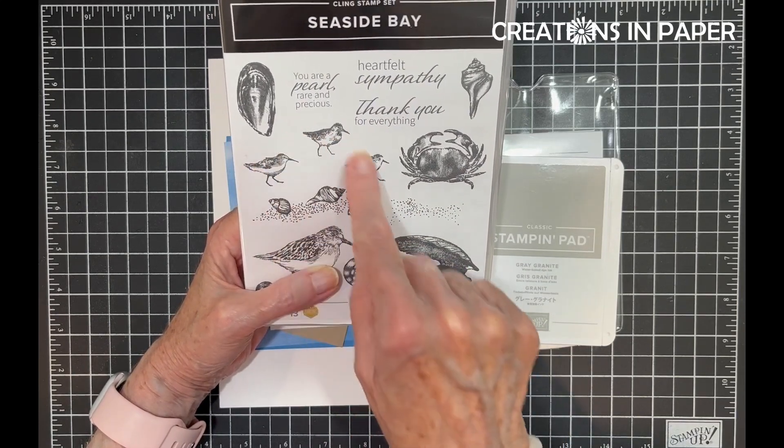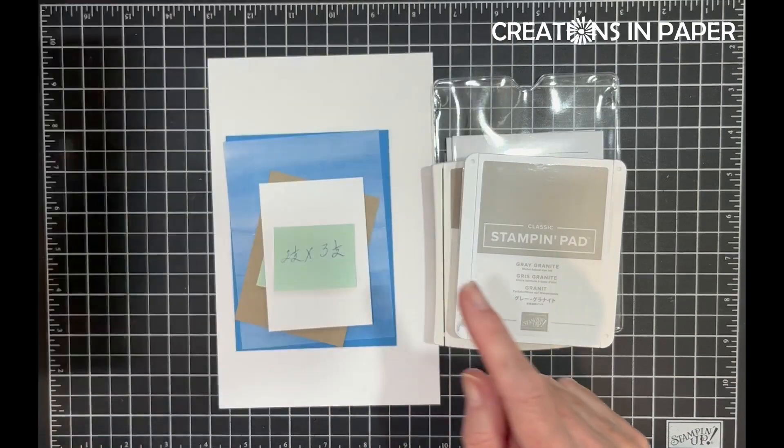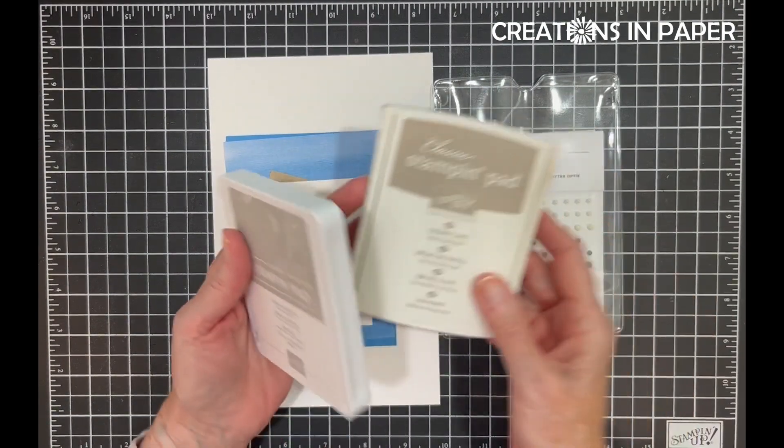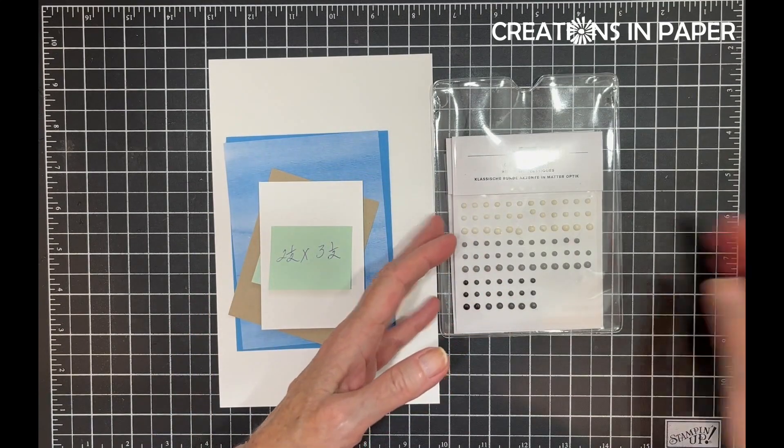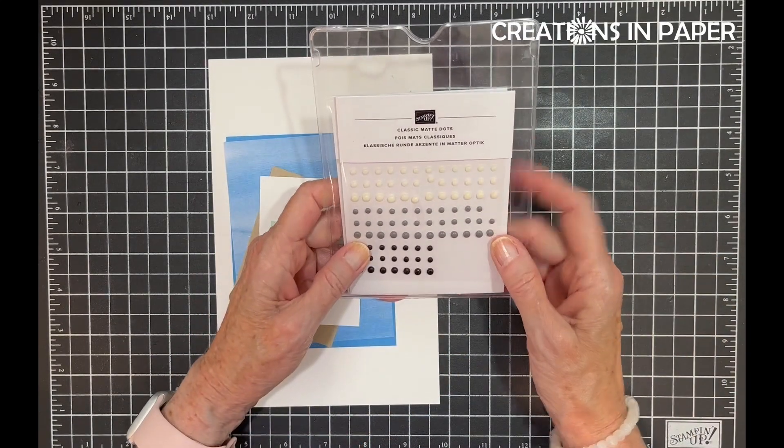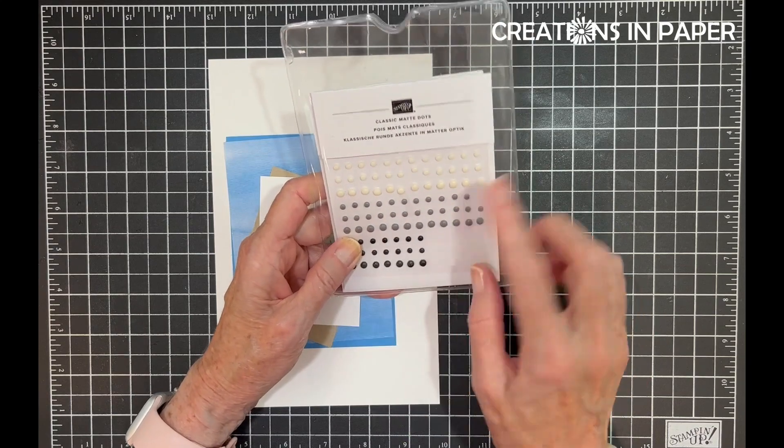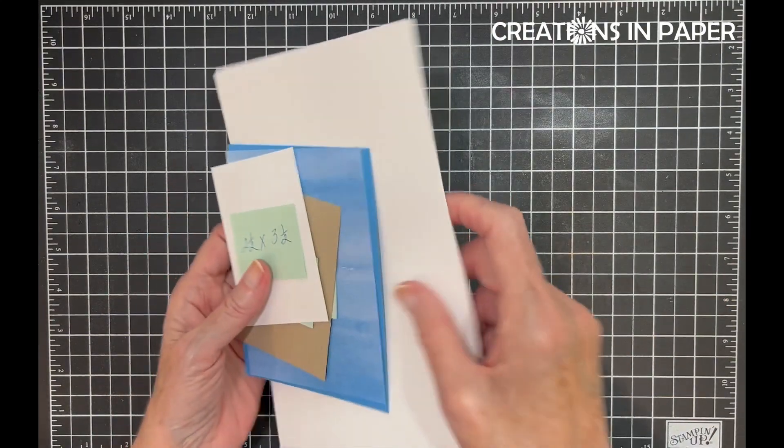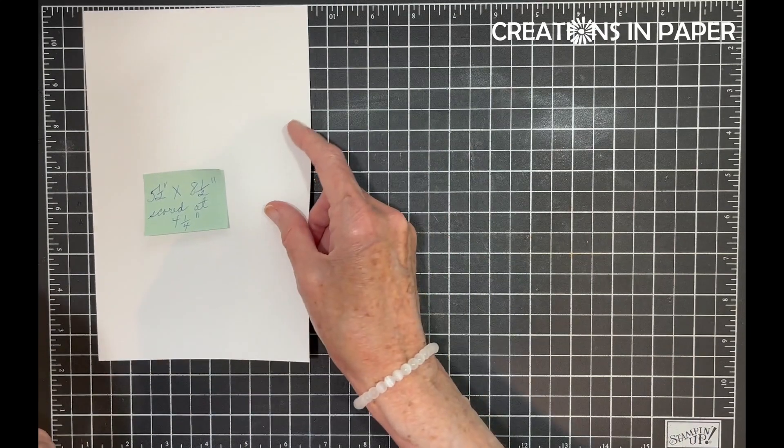I'm going to use Gray Granite for my birds and Crumb Cake for the shells and sand. I'm going to add some Classic Matte Dots in the gray. And then for the card, you're going to need...